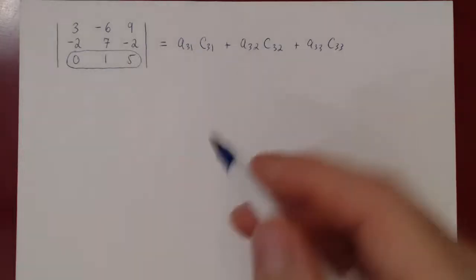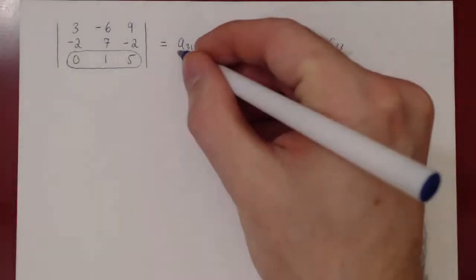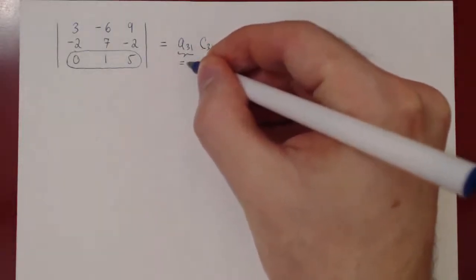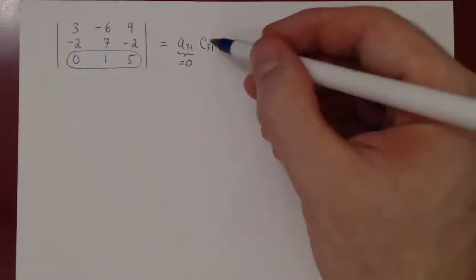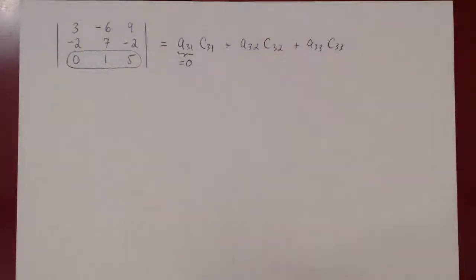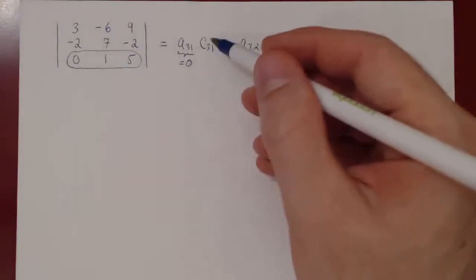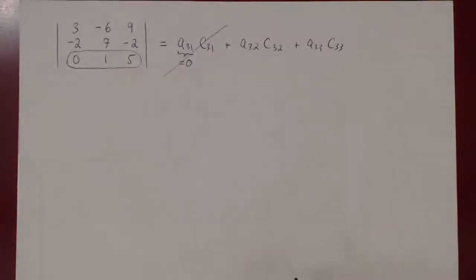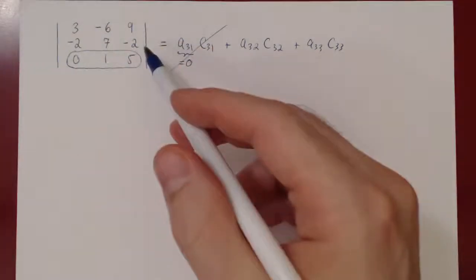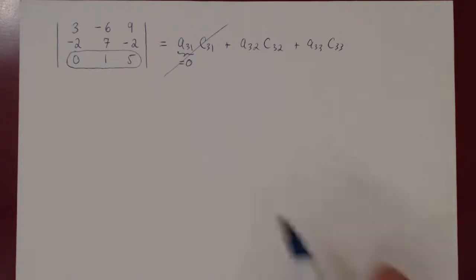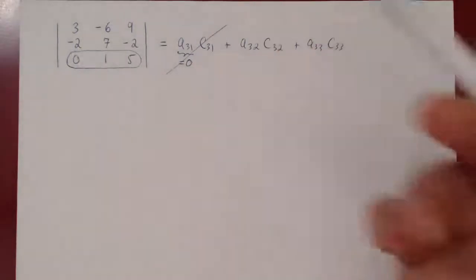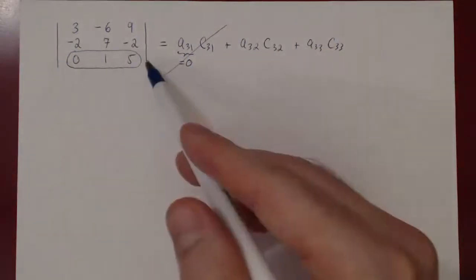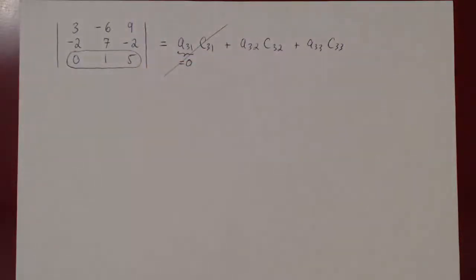Let's replace the entries of the matrix. You see that a31 is equal to zero, so we don't have to bother computing the cofactor c31 — whatever the value is, we're multiplying by zero, so it gets cancelled. Every time you have a zero, you do not have to compute the corresponding cofactor. The more zeros you have, the easier your job will be. Here we only have a single zero, so the best we can do is choose a row or column containing that zero entry.